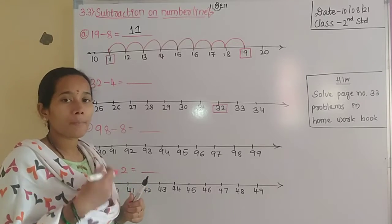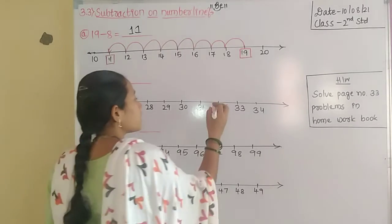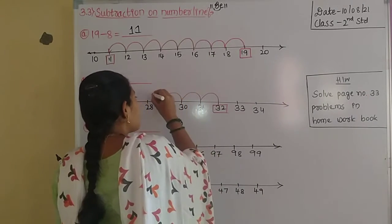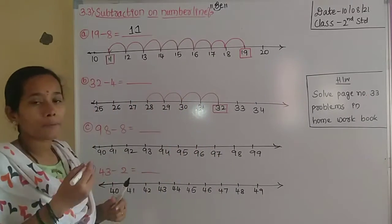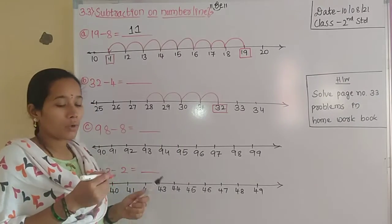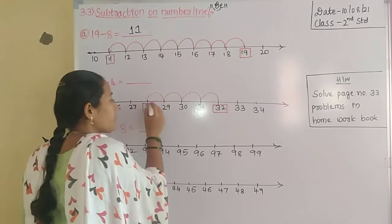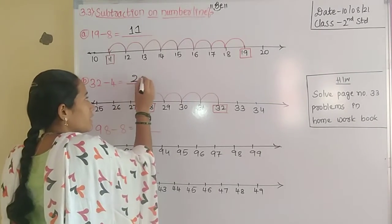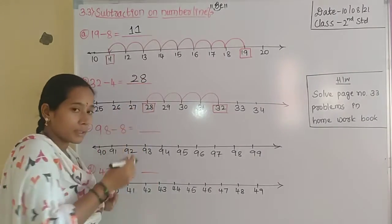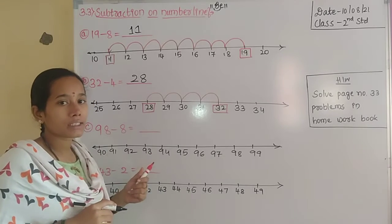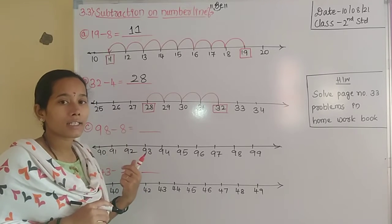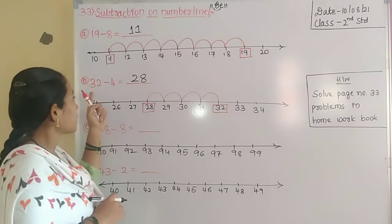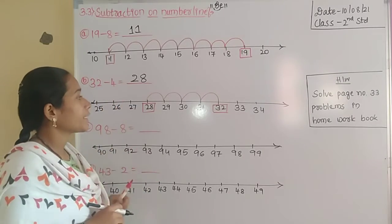We move 4 steps backward from 32 — 1, 2, 3, 4. After 4 steps backward from 32, we get the number 28. What is 28 called? It is the difference, not the sum — because this is a subtraction process. So 32 minus 4 equals 28.